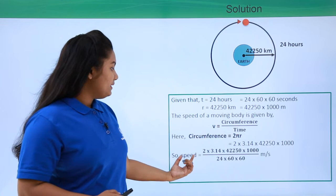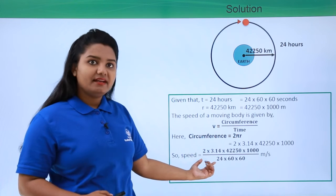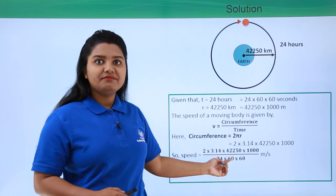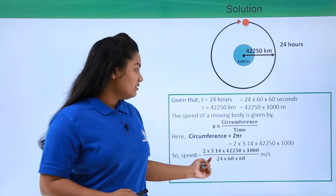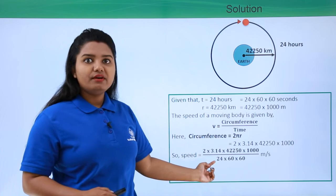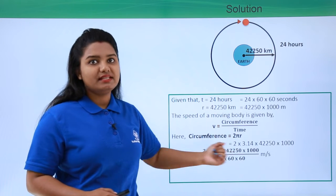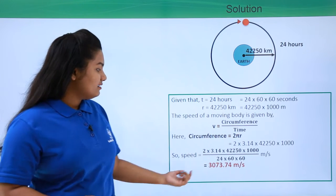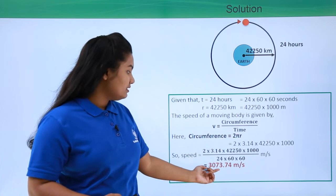The speed will be given by 2 into 3.14 into 42,250 into 1,000, divided by 24 into 60 into 60. On evaluating the whole thing, we get the answer as 3,073.74 meters per second as the speed of the artificial satellite around the earth.